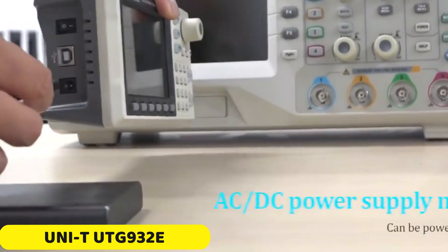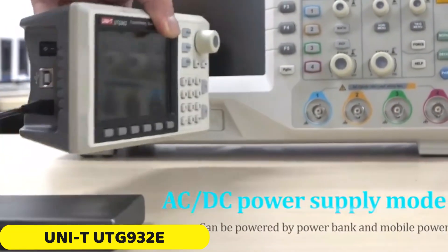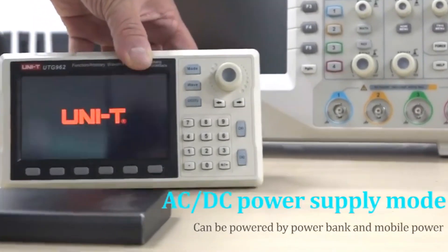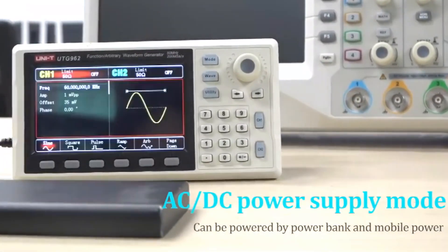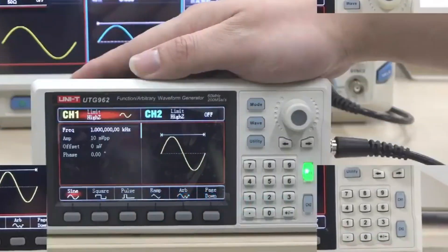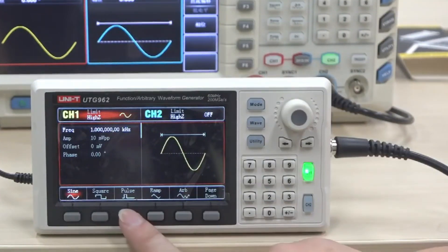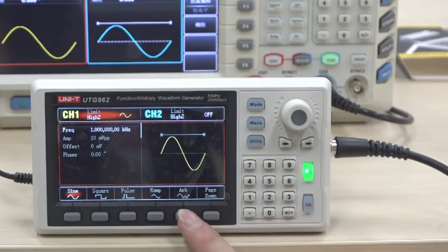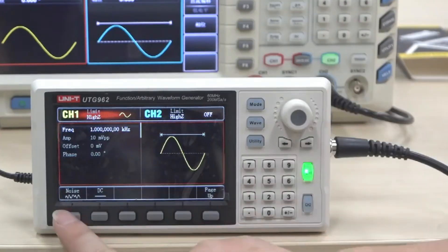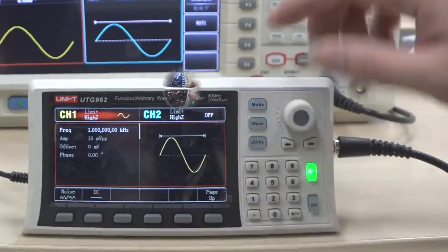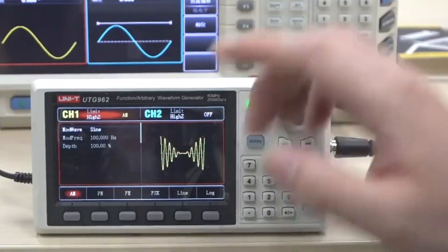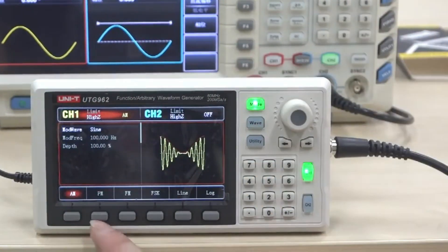Number 1: Unity UTG932 E-Signal Generator. The UTG932 E-Signal Generators offer a wide range of output waveforms, including sine, square, pulse, ramp, noise, DC, and arbitrary to cater to various testing and experimentation needs. The wide output frequency range from 1 µHz to 30 MHz and 60 MHz is crucial for handling diverse applications.